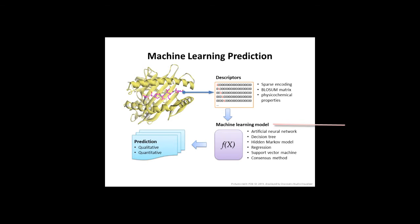The widely used models include artificial neural network, decision tree, hidden Markov model, regression, support vector machine, and consensus method. The model can either make a qualitative prediction, which predicts binding or non-binding, or a quantitative prediction, which predicts how strong the binding is.